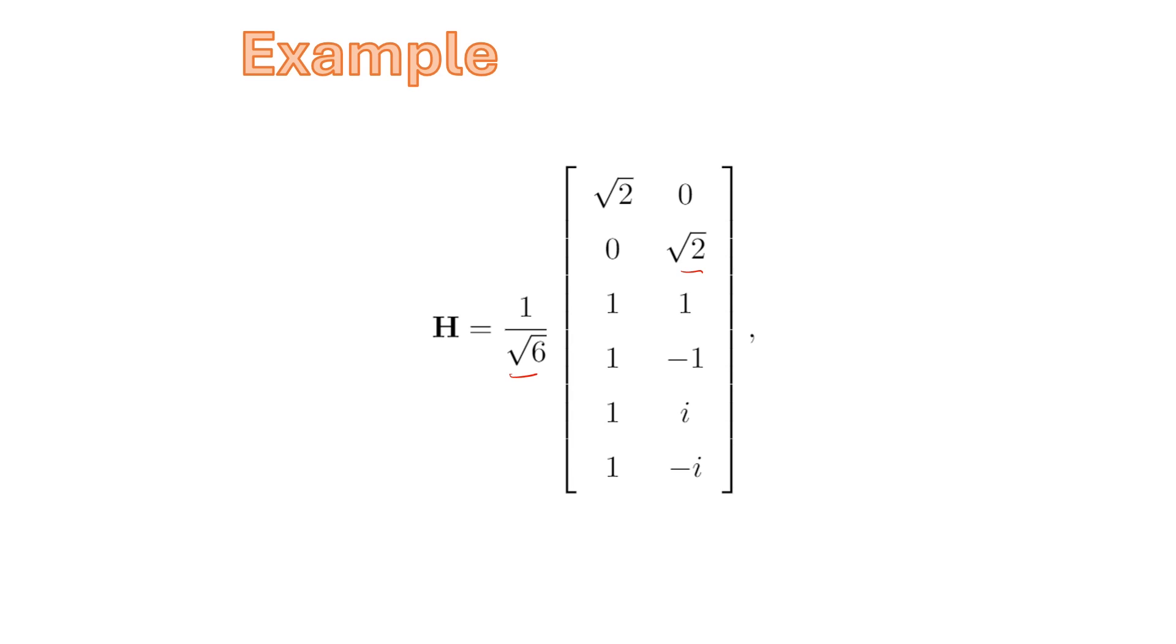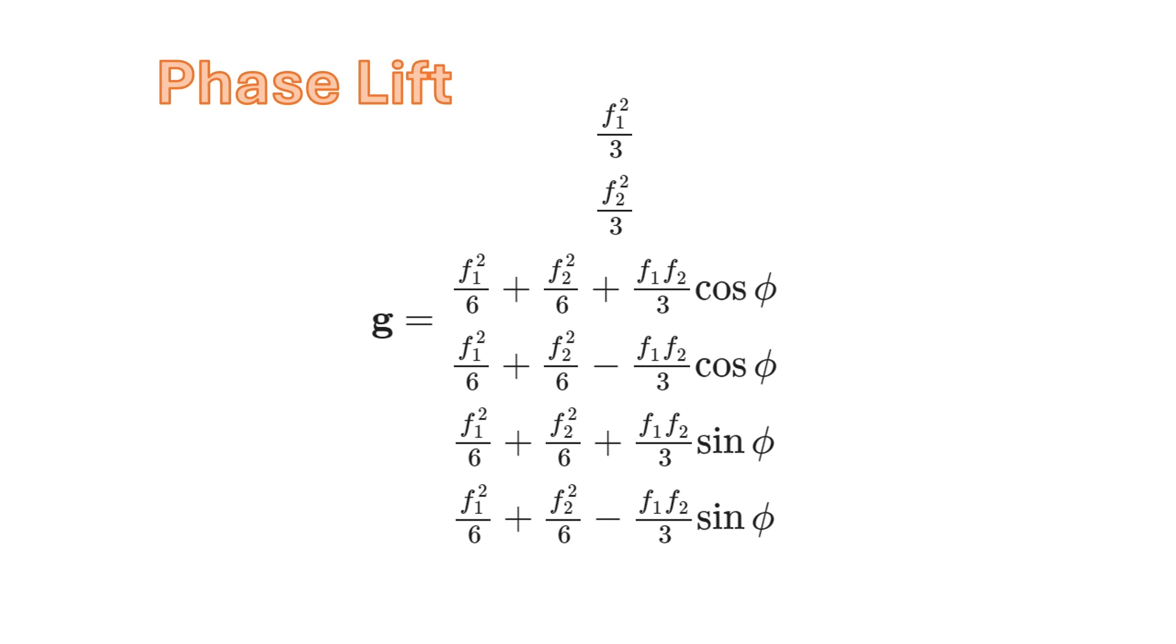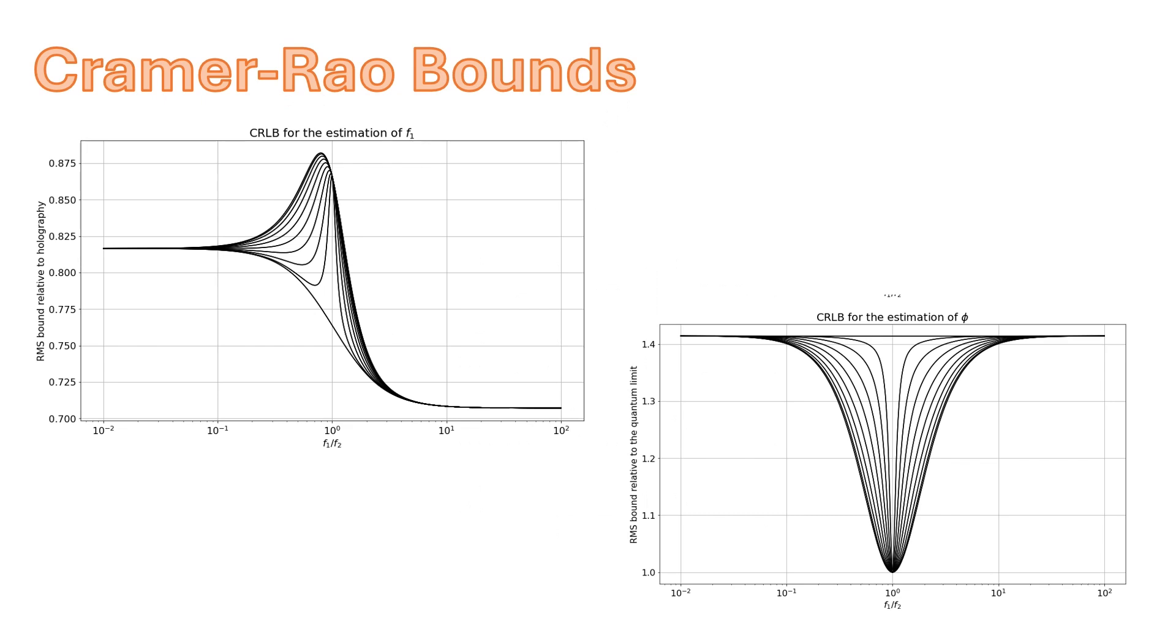For different values of H, we'll have different success in determining the relative amplitude and phase of the modes. If we take this H, then we get this set of linear equations in our measurements. If we solve for F1 squared, F2 squared, and then we think of the values F1 F2 cosine phi and F1 F2 sine phi as different variables, then we have a set of linear equations in these quadratic forms. Solving those linear equations is a method that's closely related to phase lift, a technique developed by Emmanuel Candes at Stanford. We can solve these equations for F1, F2, and then evaluate how accurate we can estimate those values using the Kramer-Rao bound analysis that we discussed back in chapter two.